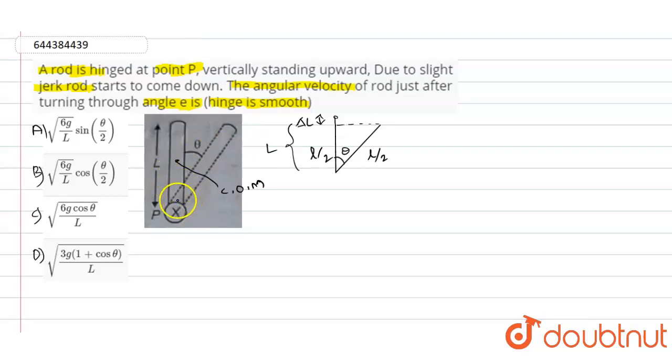If you observe in this particular figure, this rod is hinged at point P. So this is vertically standing upward. Due to the slight jerk, it has moved a little bit. So the angle made between the moved distance to the original distance is angle theta. This is the length of the rod represented as L, and this is the center of mass point COM.